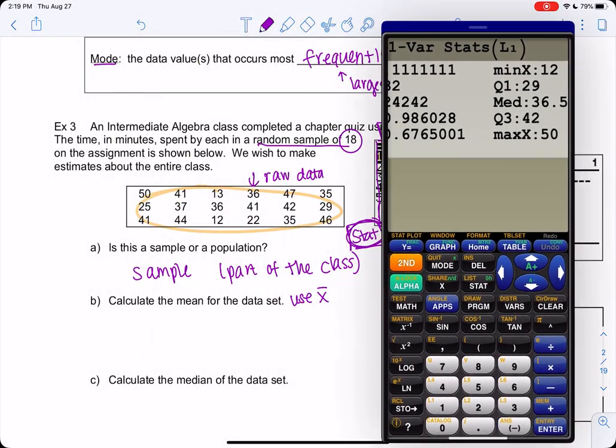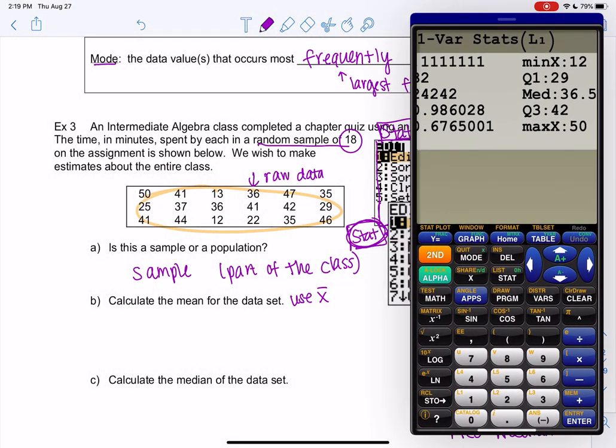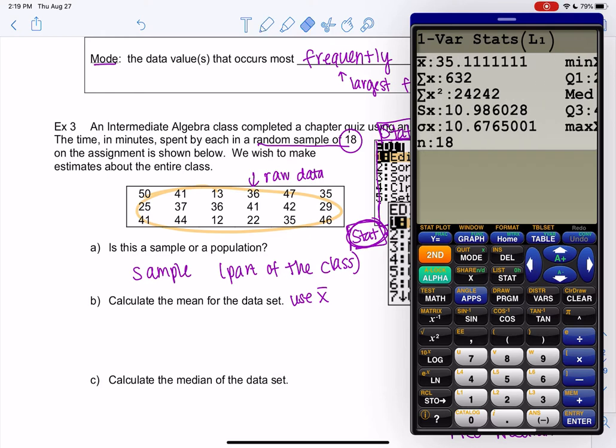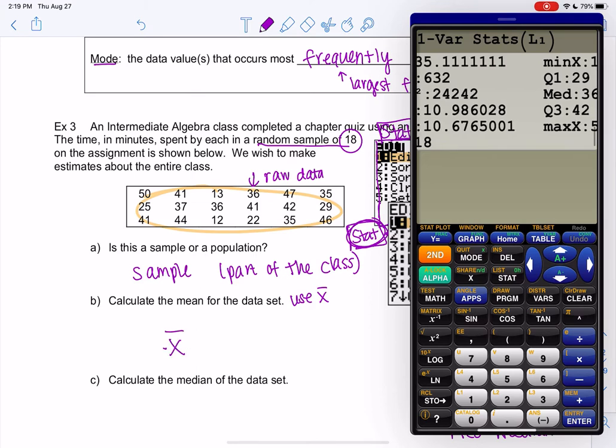All right, so let's find some information. So what's the mean? The mean is X bar, which was 35.1. I need at least one decimal place because I need more than the table. So the table has zero, so I need one. 35.1 minutes.